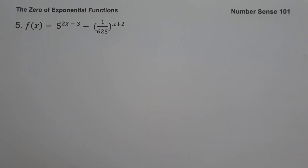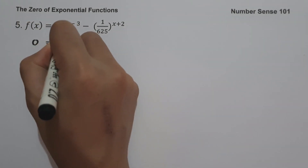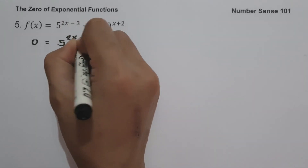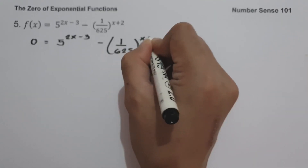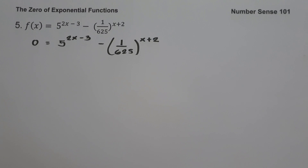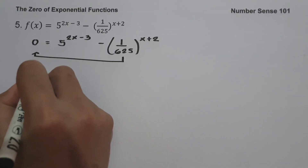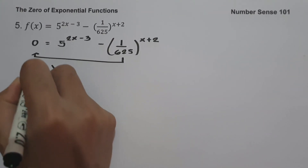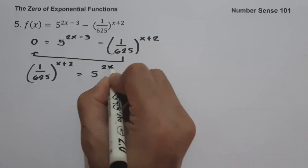On example number five, f(x) = 5 raised to (2x minus 3) minus 1 over 625 raised to (x plus 2). To find the zero, equate the function equal to zero and solve for x. Moving the fraction term gives us 1 over 625 raised to (x plus 2) = 5 raised to (2x minus 3).